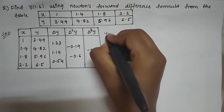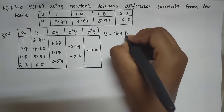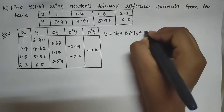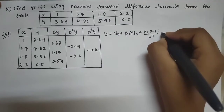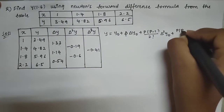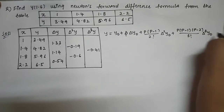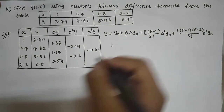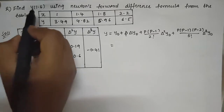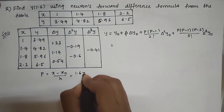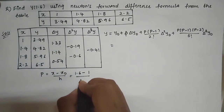Writing the forward difference formula: y = y₀ + p·Δy₀ + p(p−1)/2! · Δ²y₀ + p(p−1)(p−2)/3! · Δ³y₀. Here p = (x − x₀)/h. The x value to find is 1.6, x₀ = 1.4, and h = 0.4. So p = (1.6 − 1.4)/0.4 = 1.5.